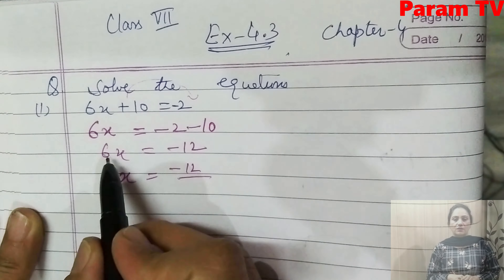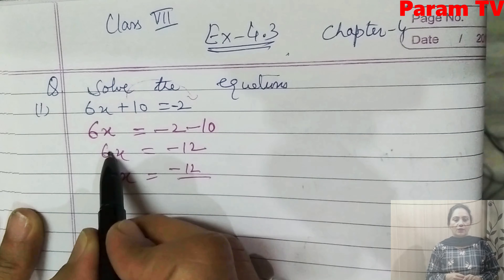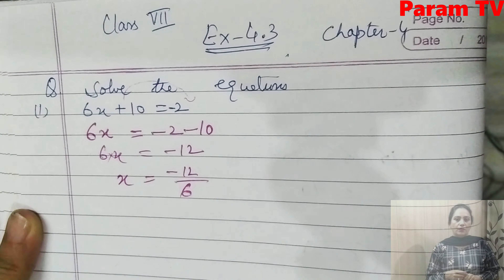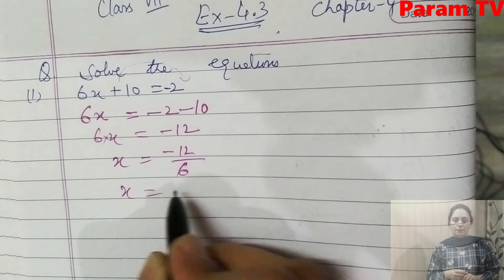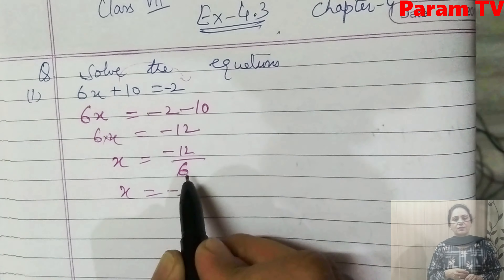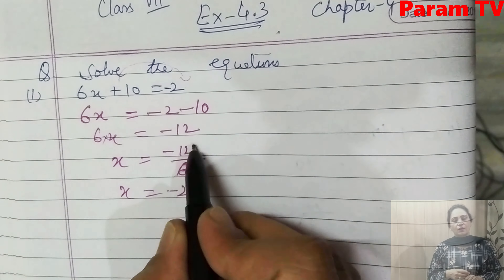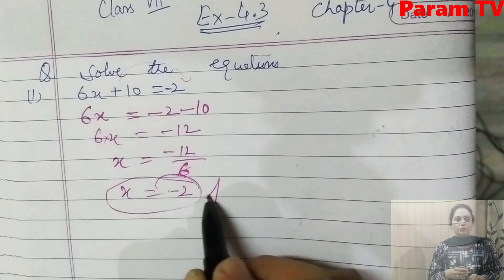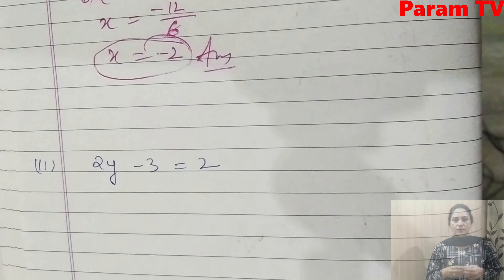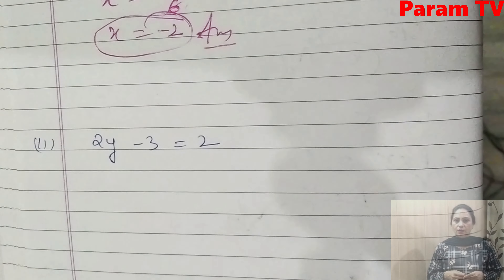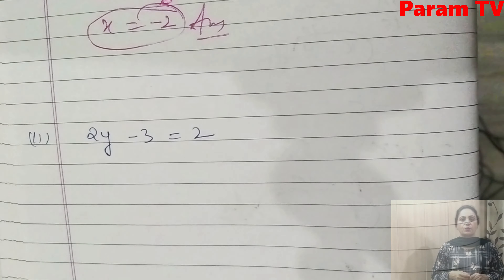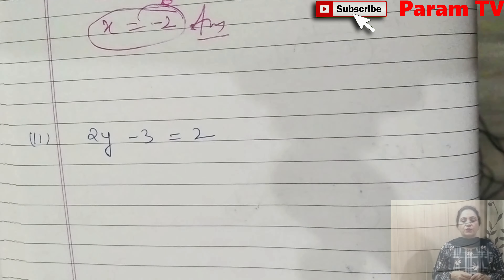Now this 6 is multiplied here — when we change the side, multiply becomes divide. So x = -12 ÷ 6. This gives you -2. So x = -2 is the answer.